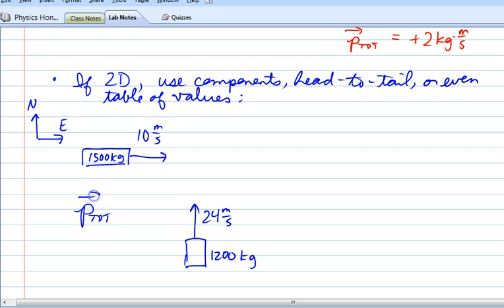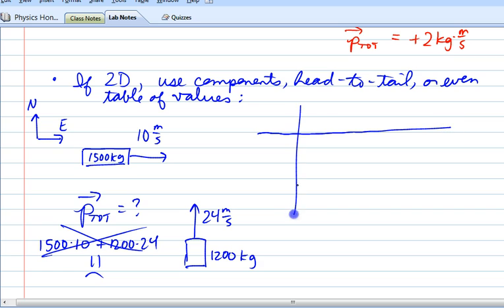Again, we can't just multiply 1500 times 10 and add that to 1200 times 24. You can't do this—no, bad physics monkeys. The reason is again that these are vectors.